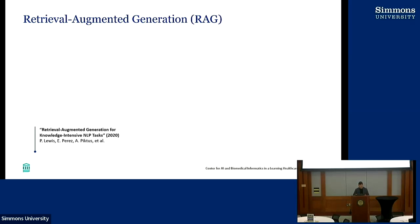We've heard a little bit about retrieval augmented generation yesterday. This is also known as the in-context method. Retrieval augmented generation is really a way to introduce new data that the LLM hasn't seen before. For example, ChatGPT hasn't seen the patient's charts before — hopefully hasn't been trained on that data — and we can send it to the large language model in a way that it can make inferences based on that data. RAG was introduced by the Facebook Meta AI team in their 2020 paper.